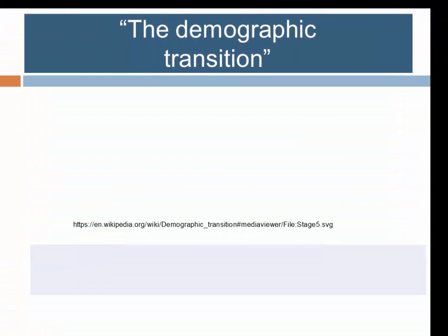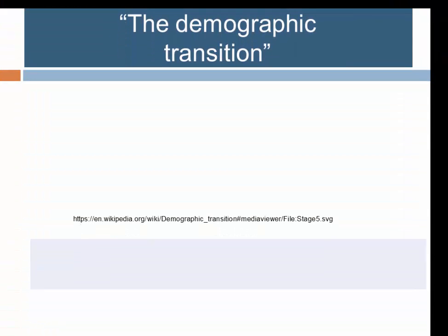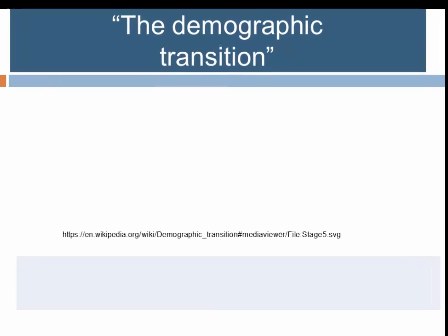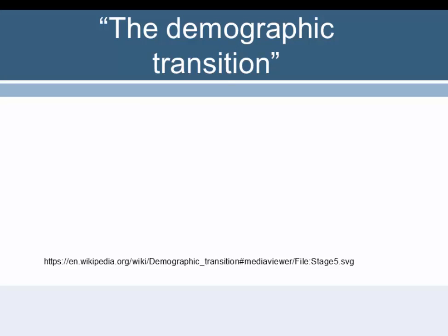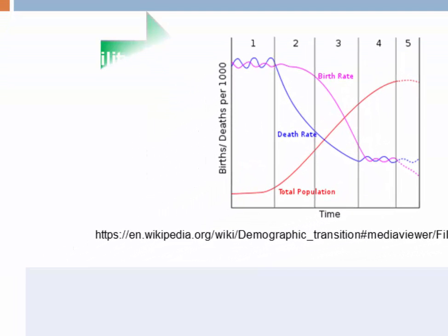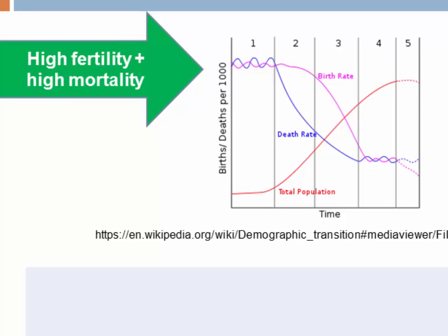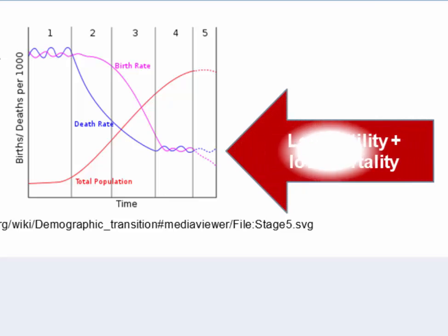This entire process — from the pre-industrial pattern of slow increase through the big boom to the great slowdown — is called the demographic transition. It begins with a period of high fertility and high mortality, a long-term pattern of human existence. Because mortality was high as well as fertility, population growth rates were quite slow over most of human history.